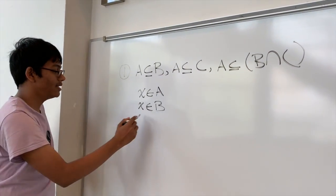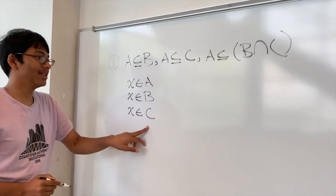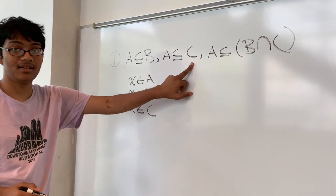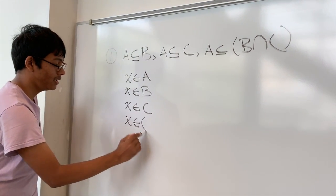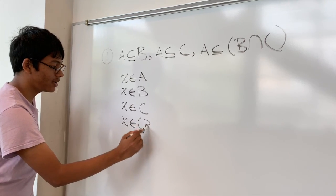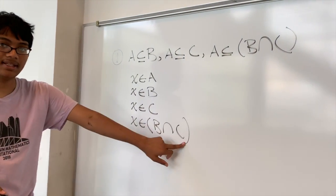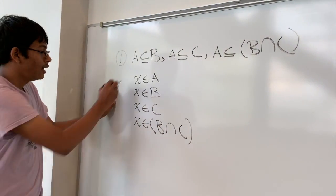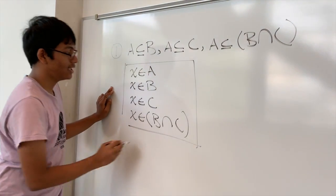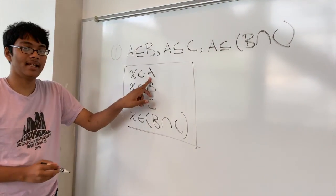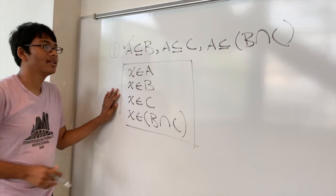And by the same reasoning, we know that X is also an element of C. So that means X must therefore be an element of the intersection of sets B and C. We can apply this reasoning to any element in set A, and thus we have proved this statement correct.